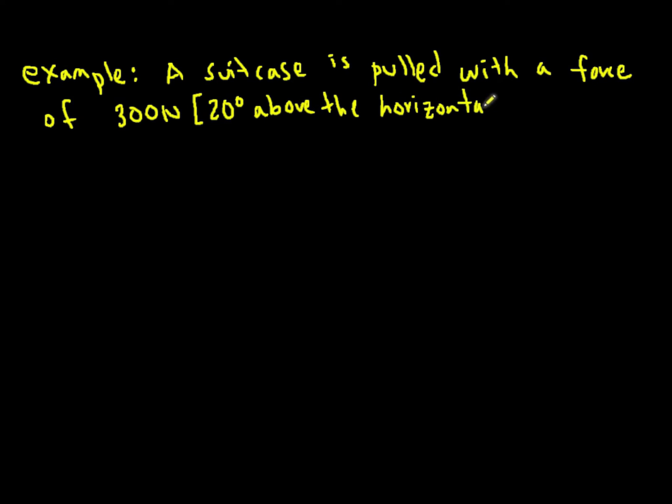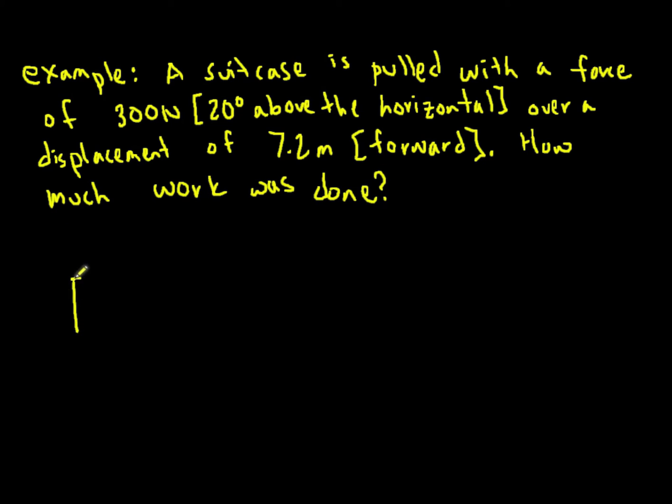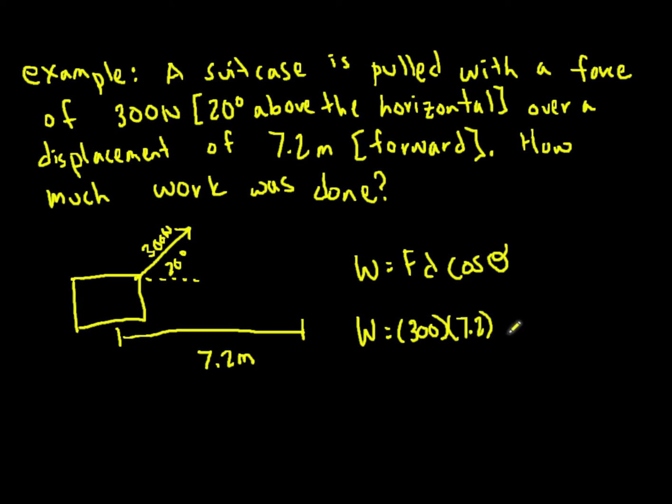For example, a suitcase is pulled with a force of 300 newtons at an angle 20 degrees above the horizontal over a displacement of 7.2 meters forward. How much work is done? So we have this suitcase being pulled at an upward angle of 300 newtons, 20 degrees above the horizontal. The suitcase travels a displacement of 7.2 meters. Work is force times distance times cos theta, where it's 300 newtons times 7.2 meters times cos 20, which is the angle between them. This gives us work equal to 2.0 times 10 to the 3 joules.